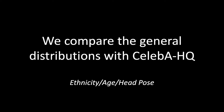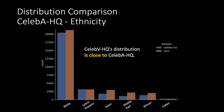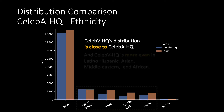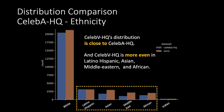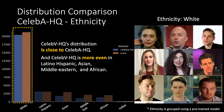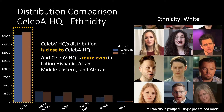We compare the general distributions with CelebAHQ. The ethnic distribution roughly reflects the data distribution in terms of geography. CelebVHQ achieves a distribution close to CelebAHQ, and has a more even distribution in Latino-Hispanic, Asian, Middle Eastern, and African. Note that ethnicity is grouped using a pre-trained model.